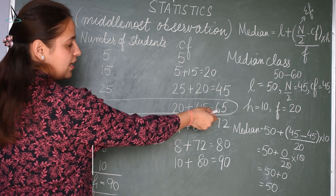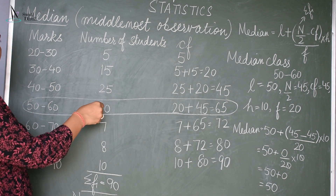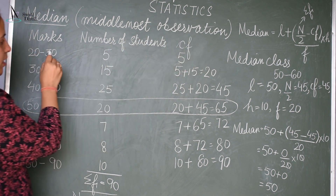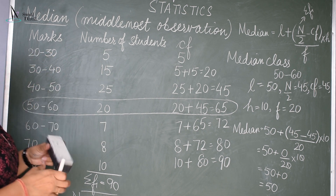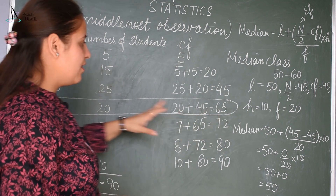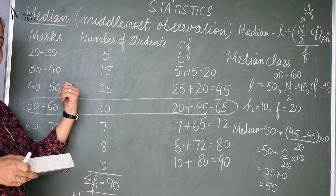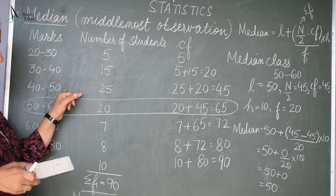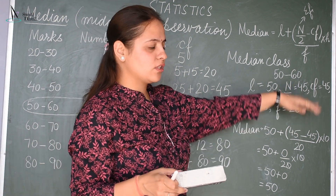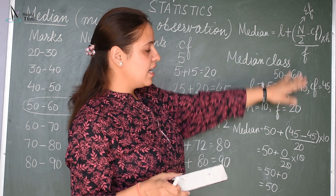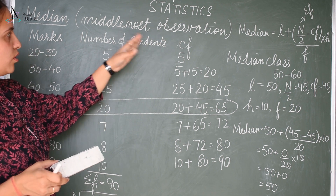That value is 65, so the median class is 50 to 60. L is the lower limit, F is the frequency of the median class, H is the upper limit minus the lower limit giving 10, and CF is the cumulative frequency of the preceding class 40 to 50, which is 45. Substitute all the values to get the median. This is how we find the middle most observation — the median.